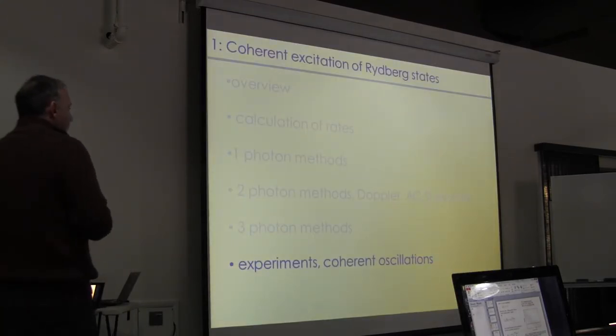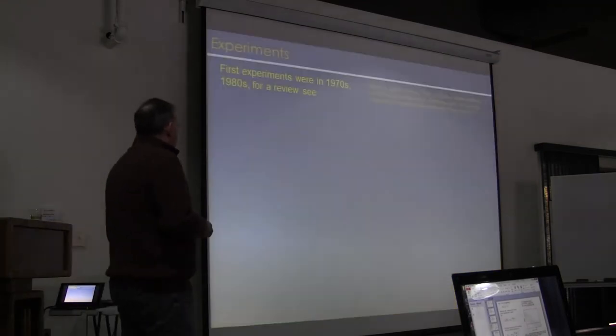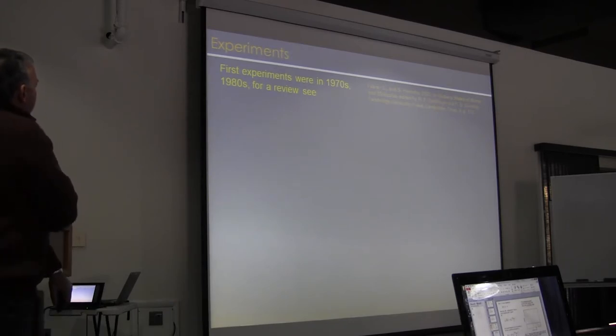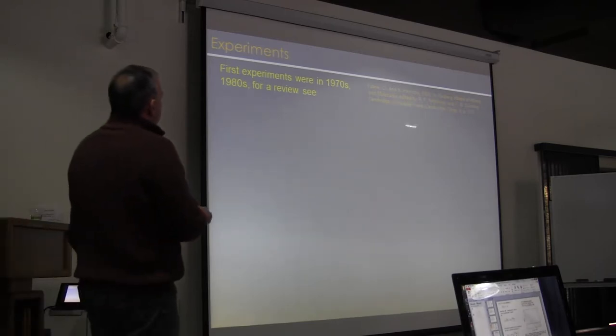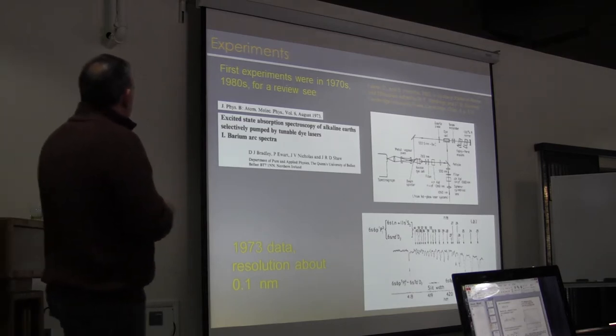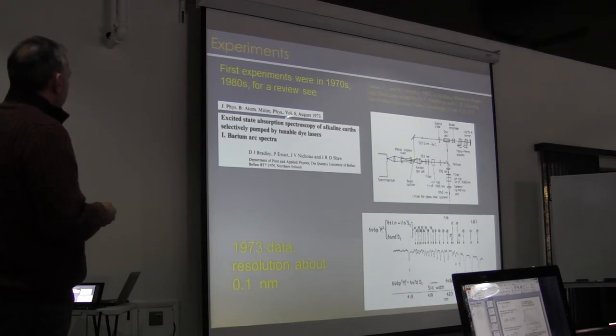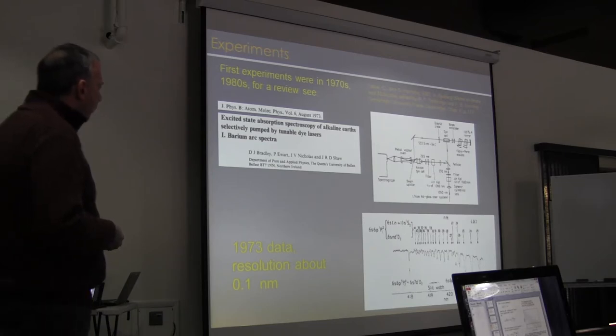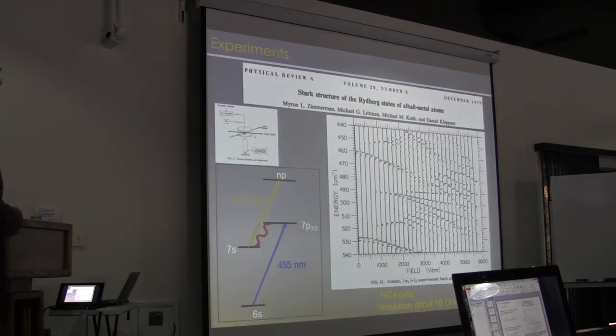So let me go through a couple of experiments that have been done showing coherent oscillations between ground and Rydberg states. The first experiments on multiphoton excitations of Rydberg atoms, I guess, were from the 70s and early 80s. There's a nice review of earlier work by Leuchs and this book by Gary Dunning. One of the first experiments I came across in the literature is this work on spectroscopy of Rydberg states of alkaline earths. And this is 1973 data, resolution about a tenth of a nanometer. Looking at this data, which was taken using pulsed-dye lasers, I guess. Sorry. Neodymium glass laser system. So, pulsed-laser system.